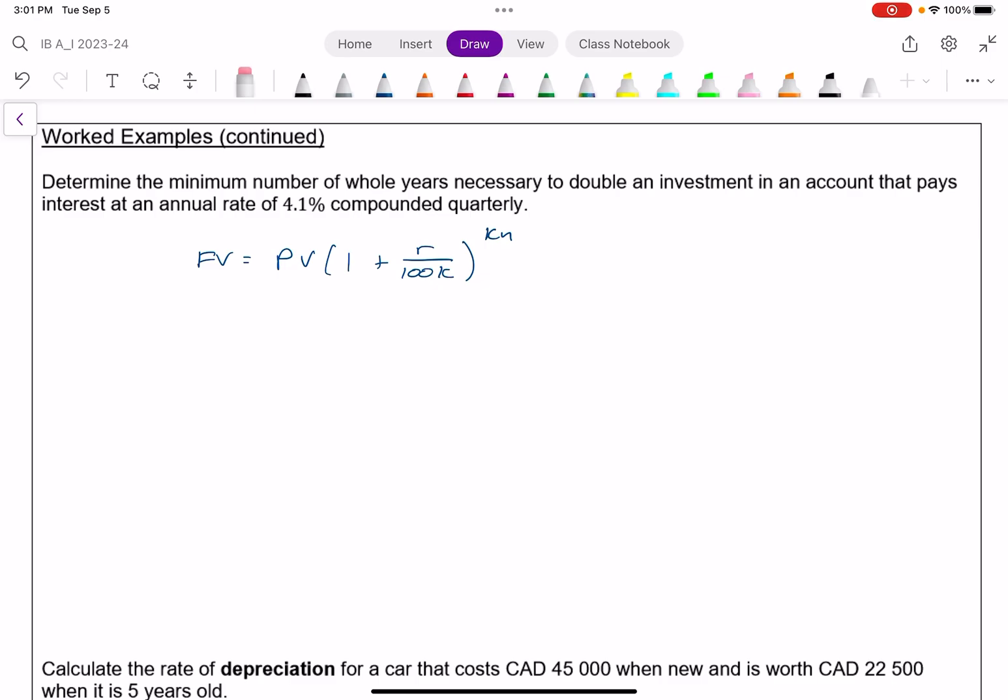Future value equals present value times 1 plus the rate divided by 100k to the power of kn. In this case, the present value doesn't actually tell you. But what we do know is we want this to double. So in essence, we can think of the present value being any number we want. I like the number 1. And if that's the case, when it doubles, our future value should be double of 1, which is clearly 2. You can put any number you want for your present value, as long as your future value is double. It's hard, in my opinion, to not make it simpler than just 1 and 2. So that's the doubling. The rate of interest is 4.1. And since I'm using this formula with it already dividing by 100, I'll just put the 4.1 here. We know it is compounded quarterly, four times a year. So this k should be a 4.